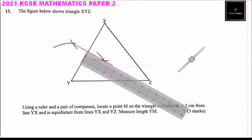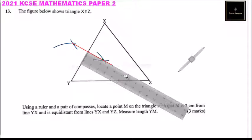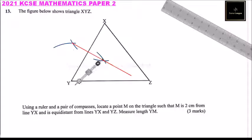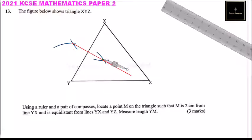For us to now draw the line, we need to draw a perpendicular line which will be parallel to YX. So we remove the ruler and bring in the compass. We are going to use that point to make a perpendicular, which will give us a line parallel to XY. So you make a mark there.